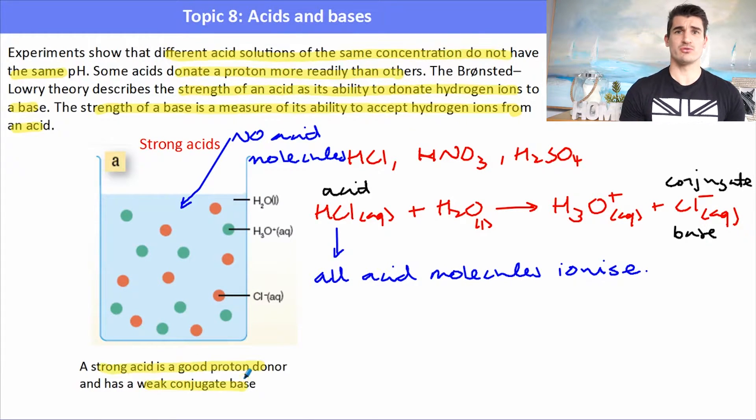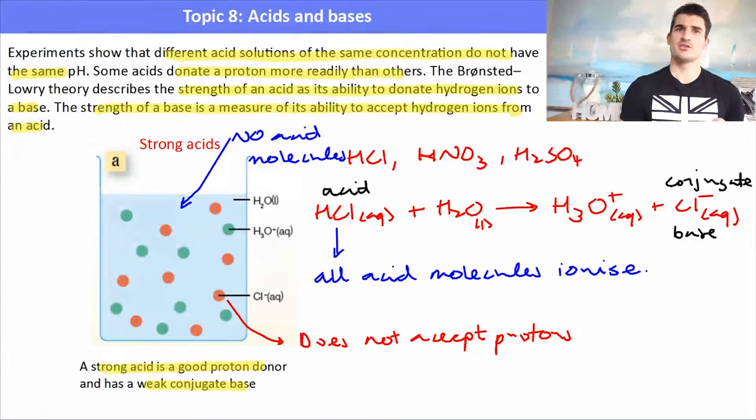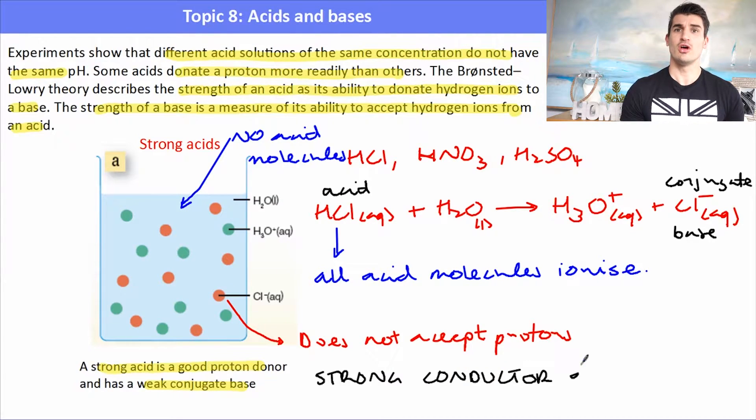Cl- ions do not want to accept a proton and form HCl molecules. The last thing we need to talk about is the conductivity of the solution. A strong acid contains a large amount of ions in the solution. A large amount of ions means the conductivity of the solution will be good. It will be a good conductor of electricity because those ions are free to migrate towards the electrodes. So a strong acid is a good conductor of electricity.